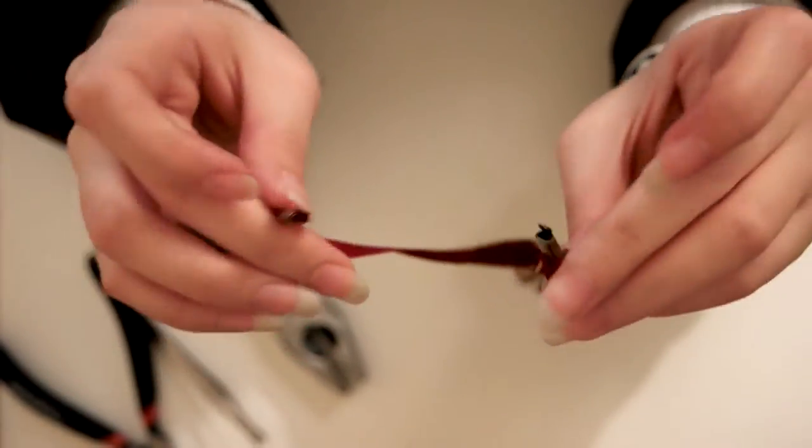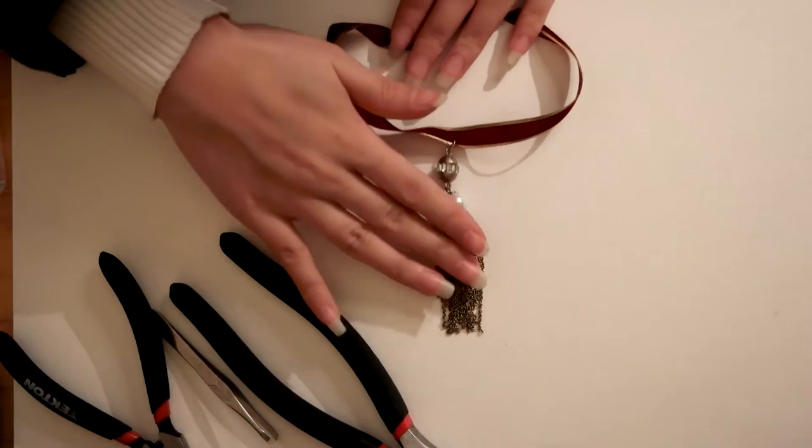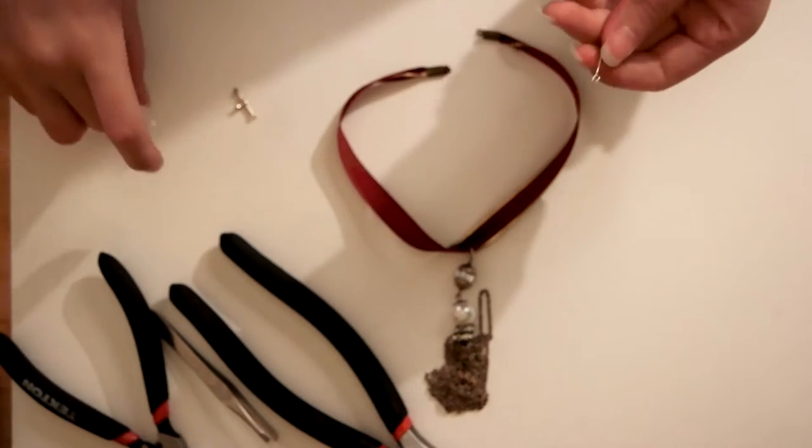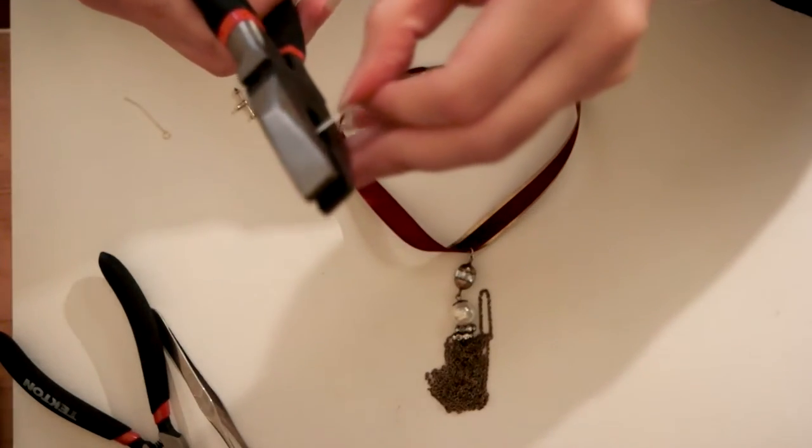The two ribbon ends should now look like this. Now I'm taking these two loop wires and making jump rings out of them since I lost my packet of jump rings.